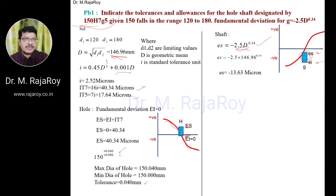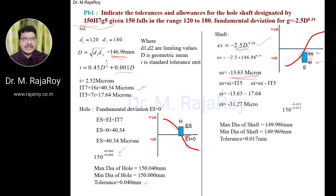Substituting the D value, ES is calculated as minus 13.63 microns. With ES known, to calculate EI, use the same relation: ES equals EI plus IT5. Rearranging, EI equals ES minus IT5. So EI equals minus 13.63 minus IT5. IT5 was calculated earlier. Now convert ES and EI values into millimeters and substitute to get the maximum shaft and minimum shaft. The difference between these is the tolerance for the shaft.